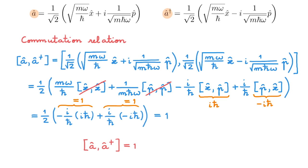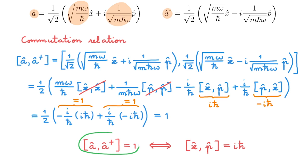This is a nice and simple expression, and we now see the motivation behind defining the ladder operators with these prefactors — they allow us to have this very compact commutation relation. We should also mention that for the quantum harmonic oscillator, this commutation relation between ladder operators encodes the same information as the canonical commutation relation between position and momentum. As you study quantum mechanics you will find yourself using this commutation relation just as much as the other, so you will end up remembering both without a problem.